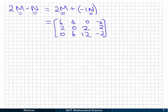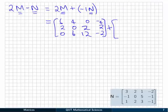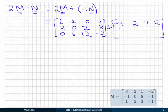So we can just write that out more explicitly. 2M minus N is equal to 2M plus minus 1N. 2M we've just calculated. And then we need to add to that the matrix minus 1N. I've just popped N down the bottom here for reference. We just need to multiply all those numbers by minus 1 basically. So we're going to have minus 3, minus 2, minus 1, 2. Then 1, 0, minus 5, and 1. And finally minus 1, minus 2, minus 3, and 1.